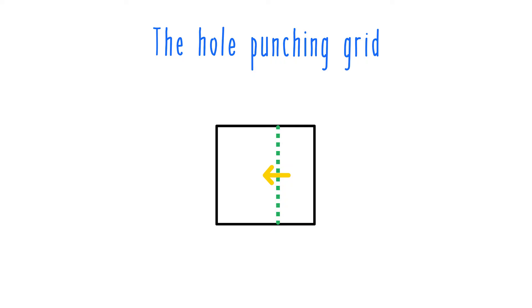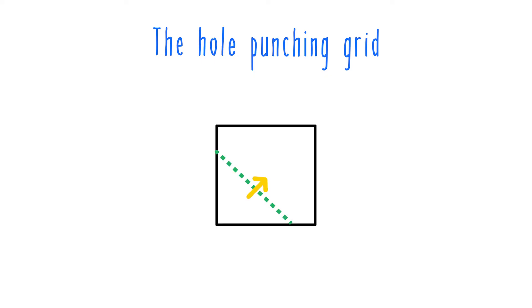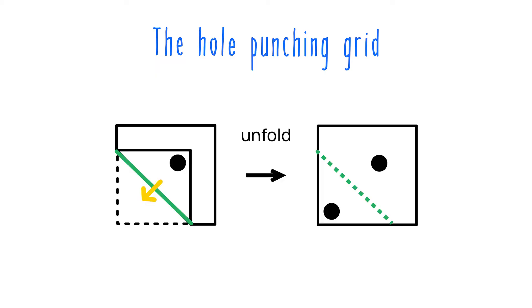You can also have folds like this that involve about three quarters of the paper. This unfolding, for instance, would move this hole from the second column to the last column. Likewise, a fold like this would result in this hole moving from up here to down here. Again, symmetrically across the axis of the fold and always according to this grid.